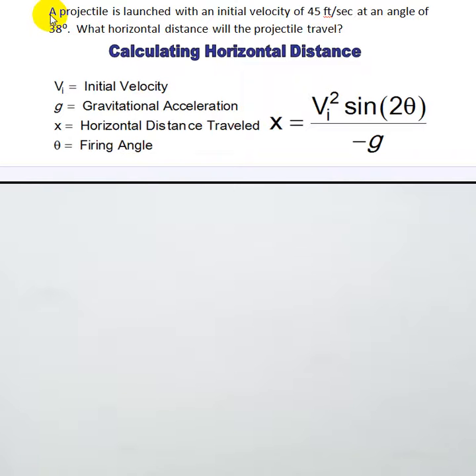So look at the example at the top of the page. A projectile is launched with an initial velocity of 45 feet per second at an angle of 38 degrees.